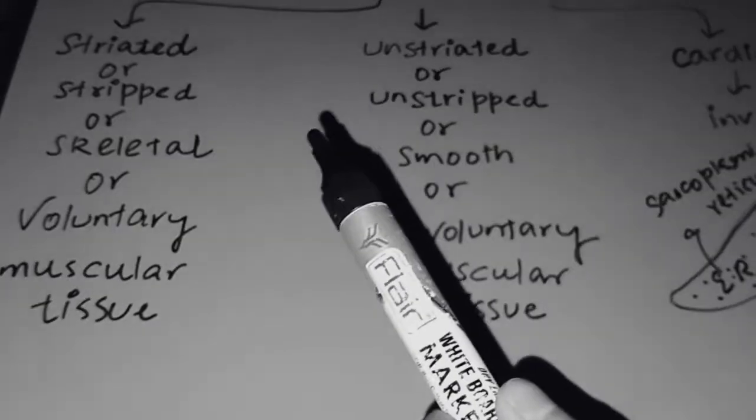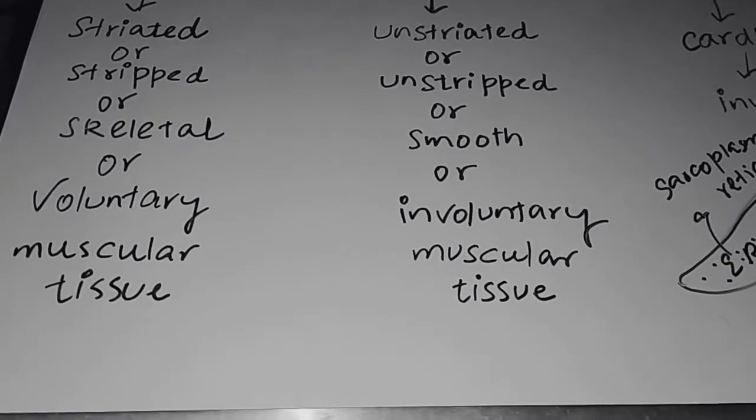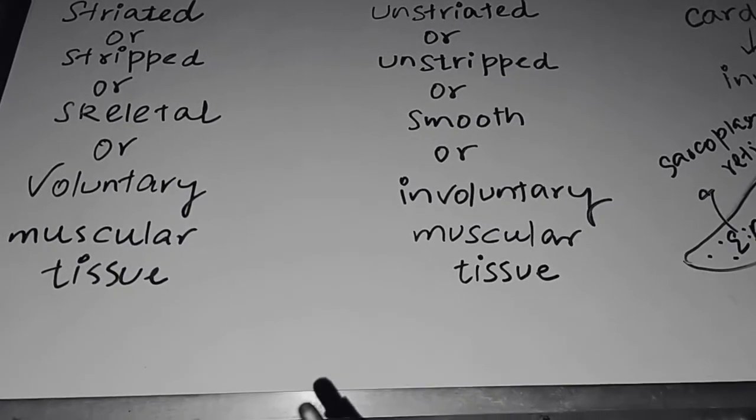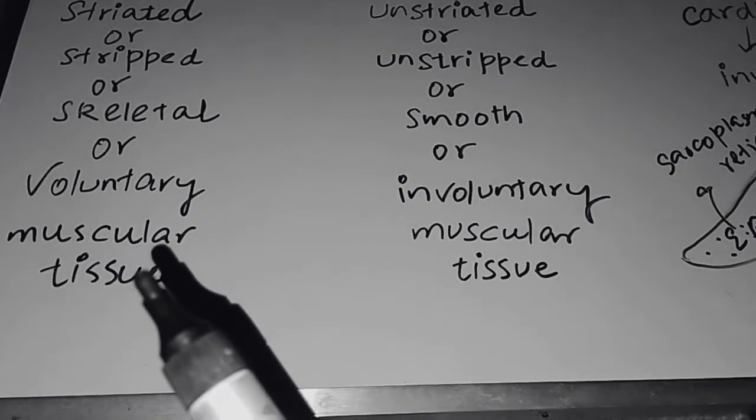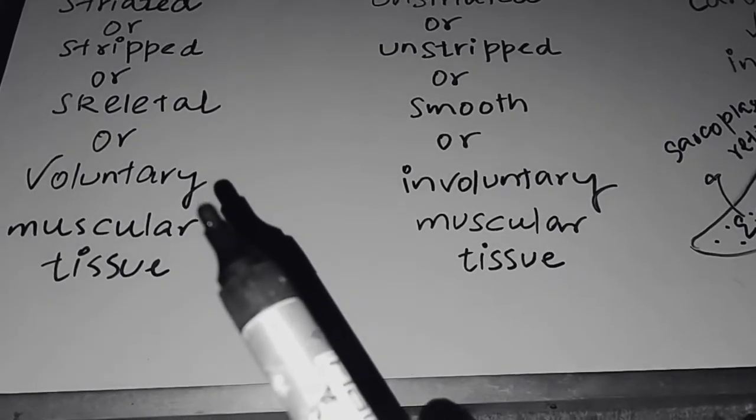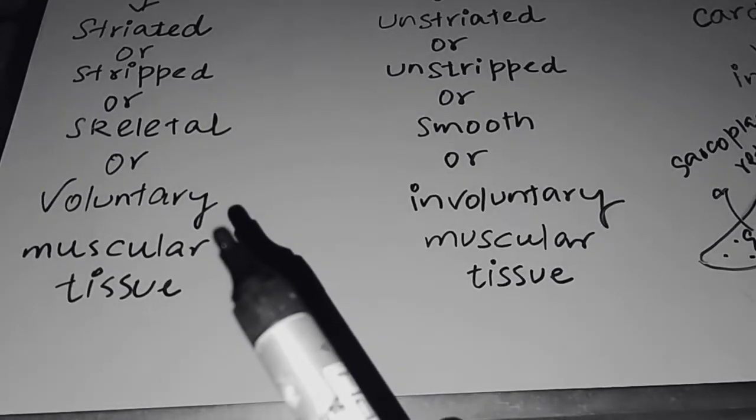This time I have told you that the striated muscle is attached to the bone, and the contraction and working is under the will of an organism. That's why they are called voluntary, means the contraction and working of these muscle cells or tissue is under the will of an organism. We contract them where it is attached with bones.